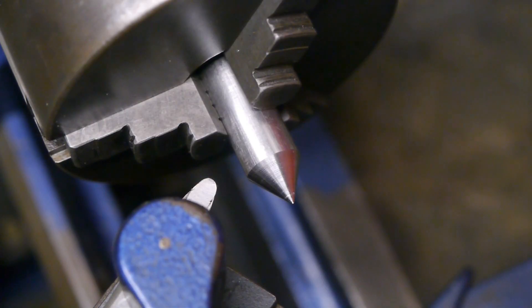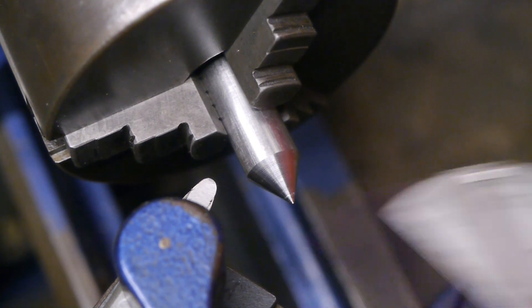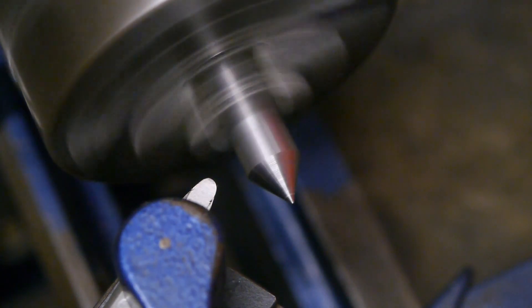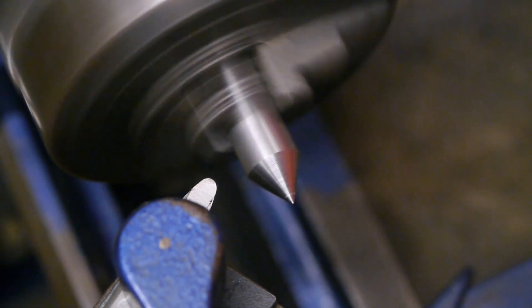I set the top slide to 30 degrees using my trusty protractor. The scale on the cross slide is pretty much unreadable, just like my other lathe. I'm running at 60 Hertz.